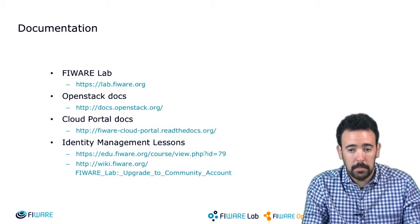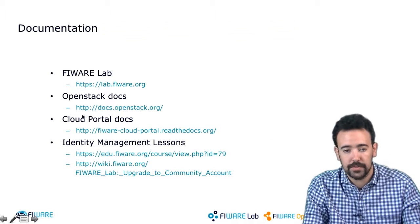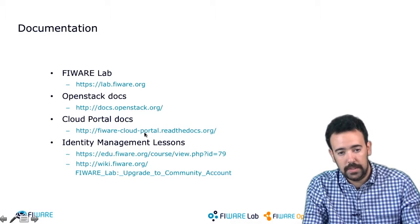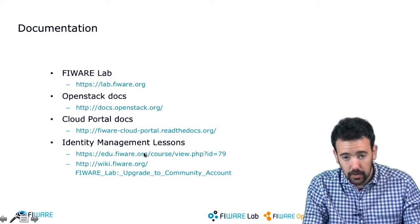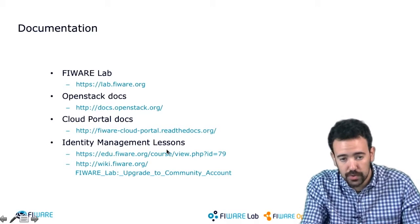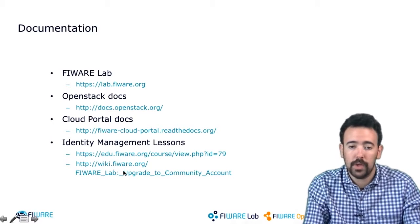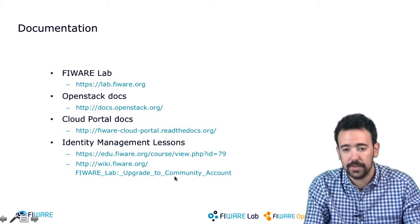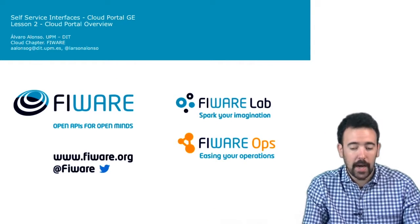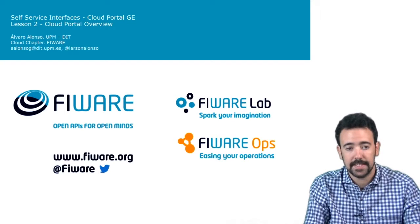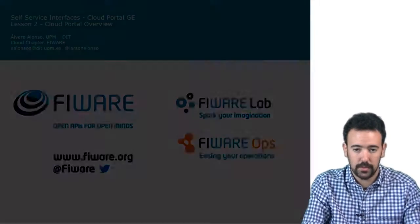Here are some links to documentation: the main page of FIWARE lab, the documentation of OpenStack, and the cloud portal generic enabler documentation. There are also links to the identity management lessons and an entry in the wiki explaining how to upgrade to a community account to start using cloud resources. Now I'm going to show you in the cloud portal how to organize and start working with it.